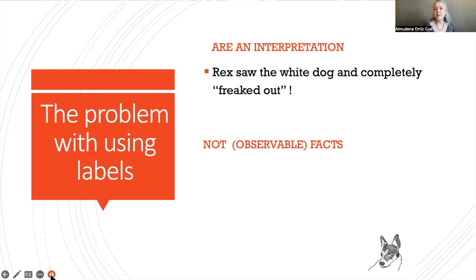For example, Rex saw the white dog and completely freaked out. He went totally kujo on me. So these two things, freaking out, going kujo, what do they mean? I might think that if you say that the dog freaked out, is it that the dog approached the other dog? Is it that the dog went behind its owner's legs because he was feeling really concerned about the other dog? So as you see, there's really no way of knowing what the label is describing.